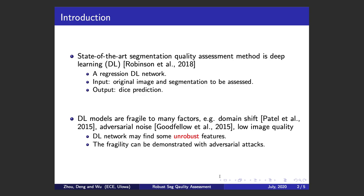However, deep learning models are very fragile to many factors, such as the domain shift problem, adversarial noise, and low image quality. One possible reason is that deep learning networks may find unrobust or unrelated features.